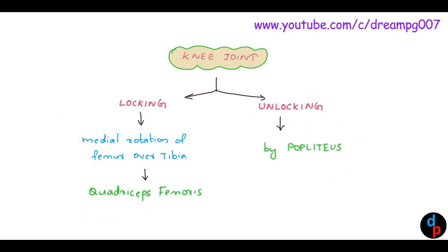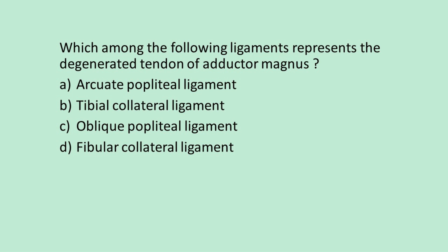Thank you very much. Now for an MCQ: Which of the following ligaments represents the degenerated tendon of adductor magnus? Option A: arcuate popliteal ligament. Option B: tibial collateral ligament. Option C: oblique popliteal ligament. Option D: fibular collateral ligament.